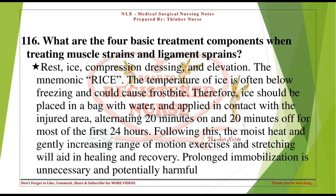What are the four basic treatment components when treating muscle strains and ligament sprains? Rest, ice, compression dressing, and elevation — the mnemonic RICE. Ice should be placed in a bag with water and applied alternating 20 minutes on and 20 minutes off for most of the first 24 hours. Following this, moist heat and gently increasing range of motion exercises and stretching will aid in healing. Prolonged immobilization is unnecessary and potentially harmful.